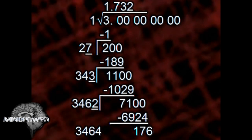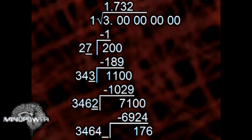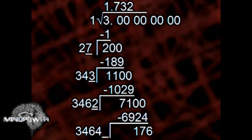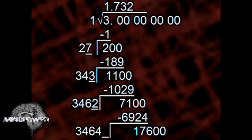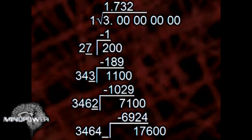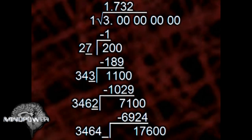Now it's going to be time to divide. We need a number next to 3464, and we need to carry down our zeros again. Since 34640-anything won't go into 17600, we're going to need a zero on top.